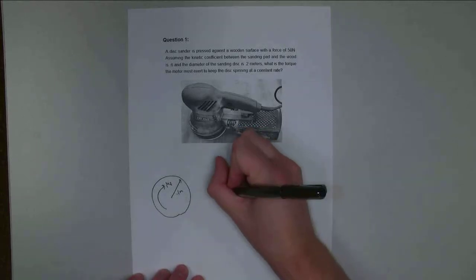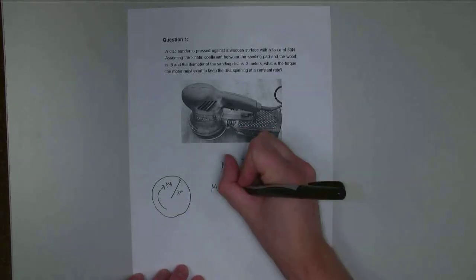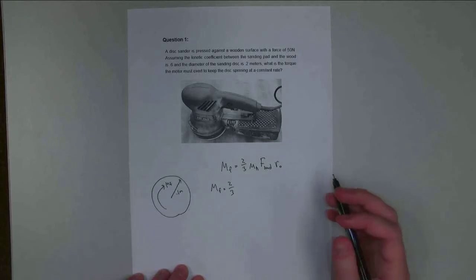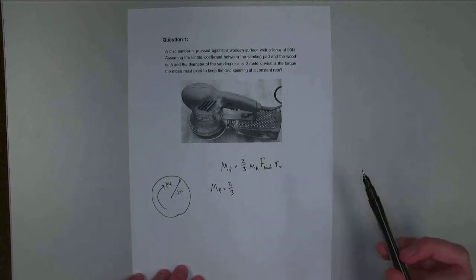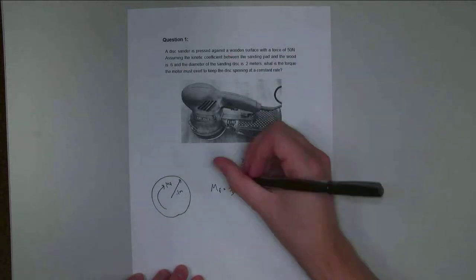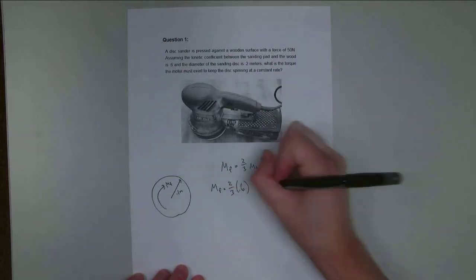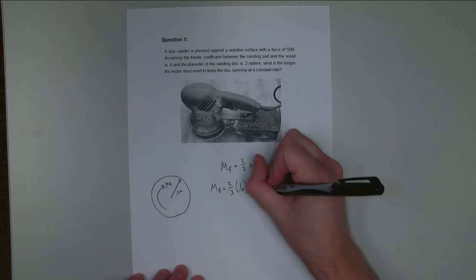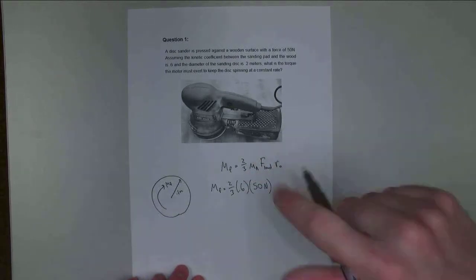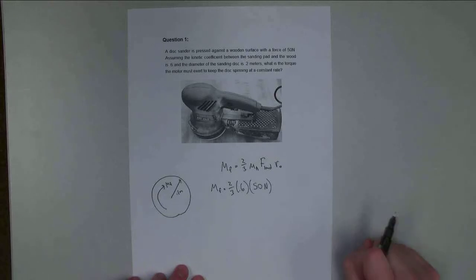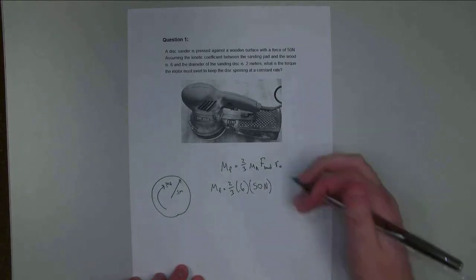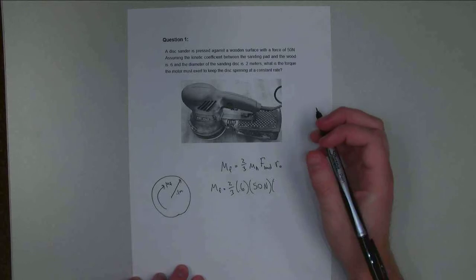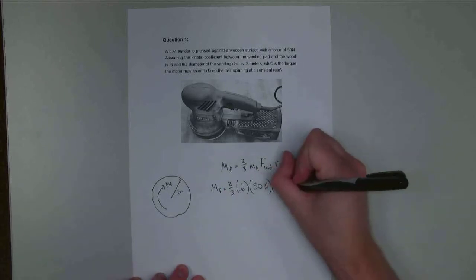So plugging in values at this point. Our mu K is given to us in the problem. The kinetic coefficient of friction, because these two things are sliding relative to one another, is 0.6. That has no units. The load force is going to be 50 newtons. And that is the force that I'm pressing down on the disc sander with, or the normal force between those two surfaces. And the radius of our circular area is 0.1 meters.